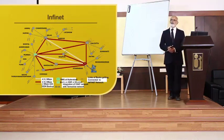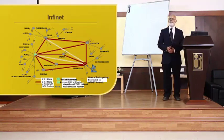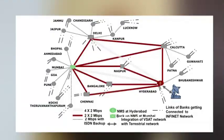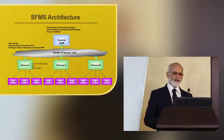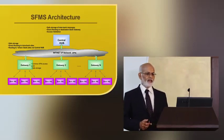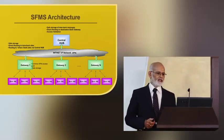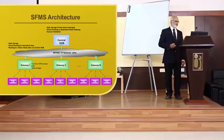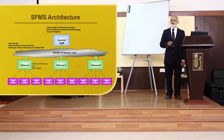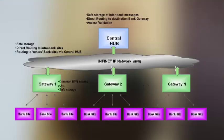Typically, the communication network and EFT systems are pictorially represented with various connections and different nodes in a MIS-type mechanism. There is a central hub connected with an internet infinite IP network system, and each bank is connected to a gateway and communicates through the hub. This is how the SMMS architecture is pictorially represented.